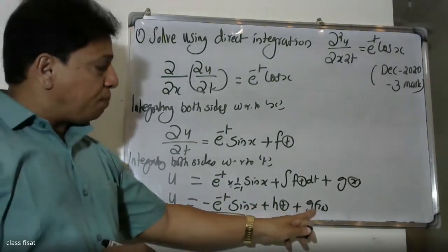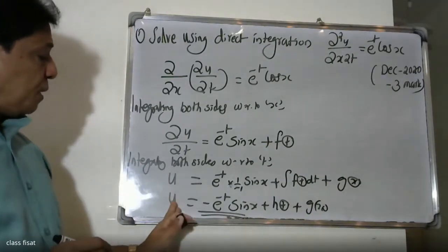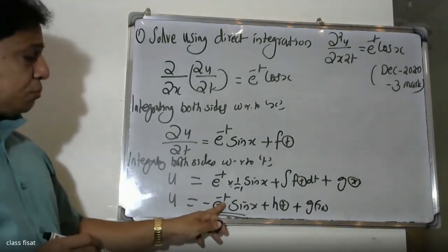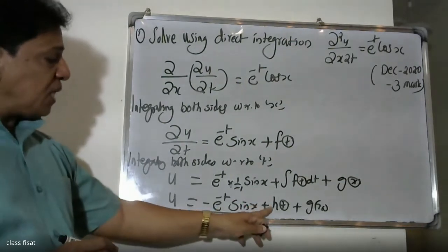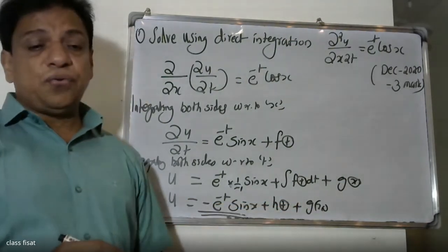The final form is: u = -e^(-t)sin(x) + h(t) + g(x).